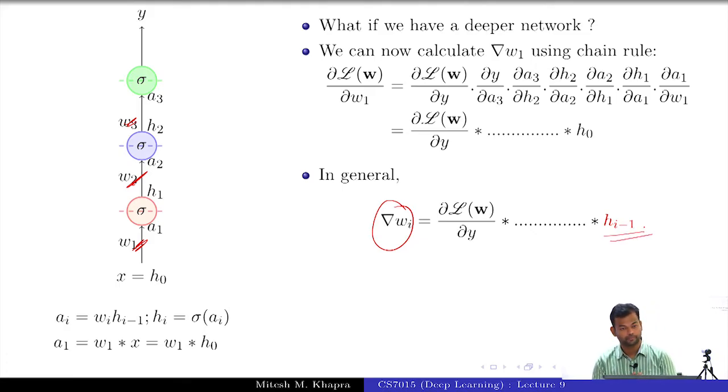What is h i minus 1? Input from the previous layer. And h 0 is the actual input. So, the gradient at any layer is actually proportional to the input from the previous layer and this could either be the input from the hidden layer or the actual input.